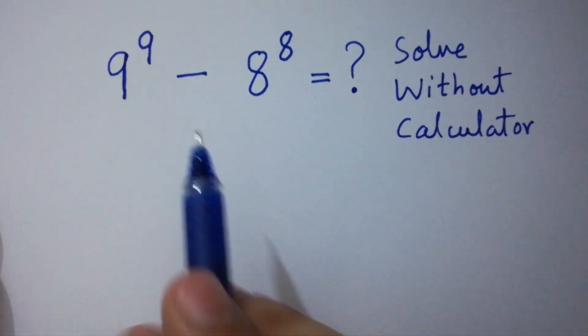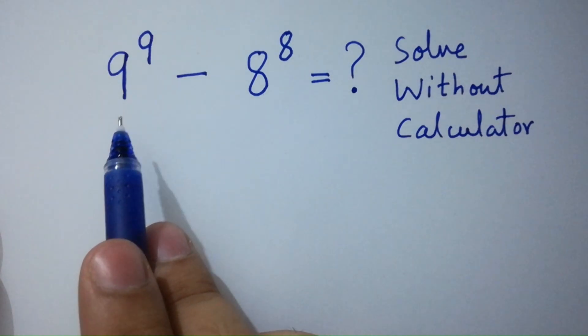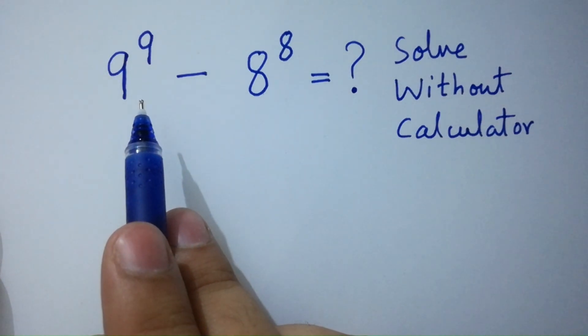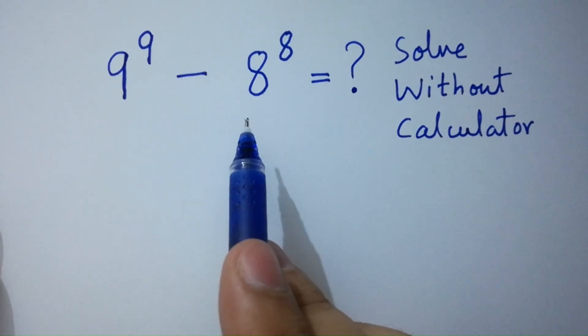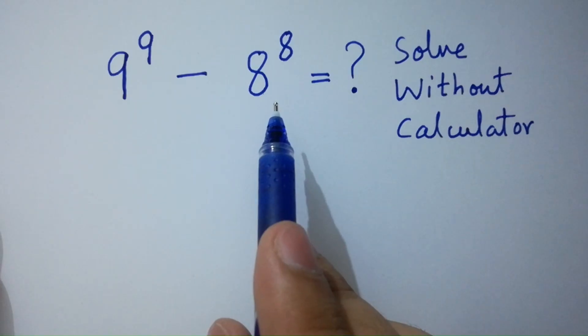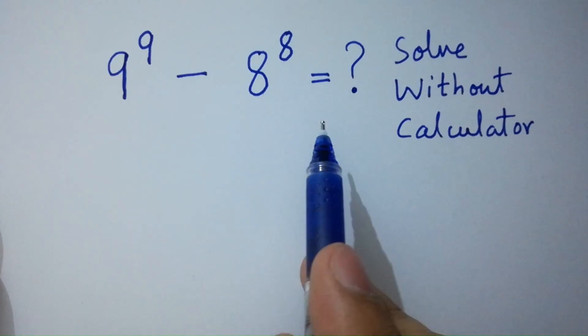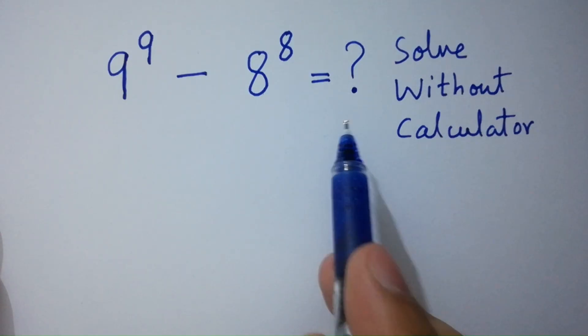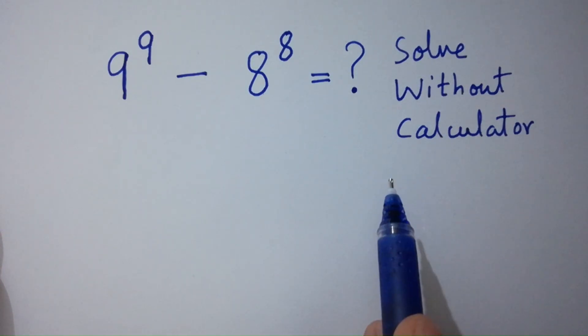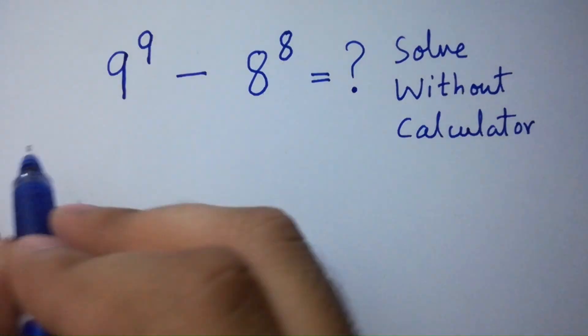Hello friends. 9 to the power 9 minus 8 to the power 8 equals what? Solve without a calculator. Let's have a solution.